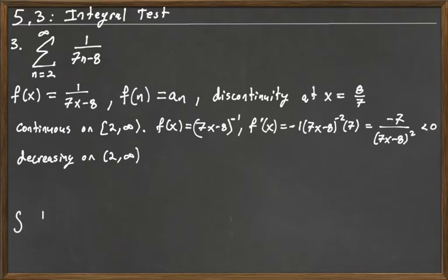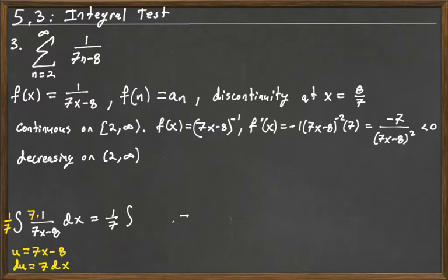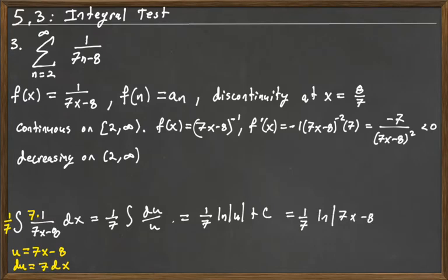We're going to integrate the indefinite integral first, then look at it as an improper integral. We integrate 1 over 7x minus 8 using u-substitution: u equals 7x minus 8, du equals 7 dx. Multiplying by 7 and 1/7 to match, this becomes (1/7) times the integral of du over u, which gives (1/7) ln|u| plus C. So the antiderivative is (1/7) ln|7x minus 8| plus C.